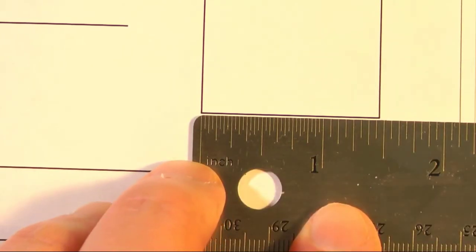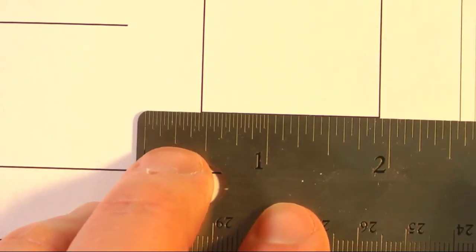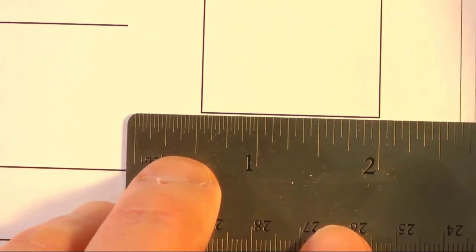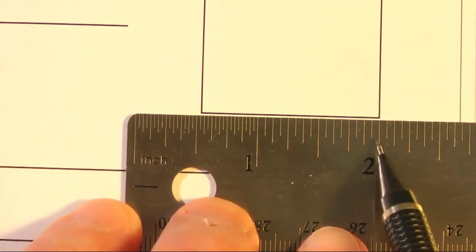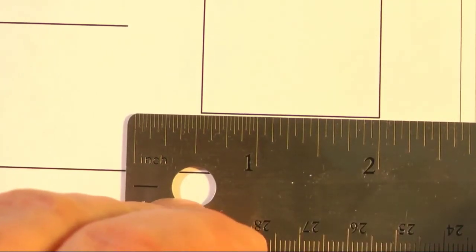So to measure this, what I'm going to do is move this over to the two inch mark. There, I'm going to go backwards. Watch this, from two to one, it's one. And then we have these tiny lines here.